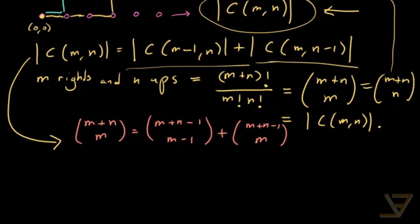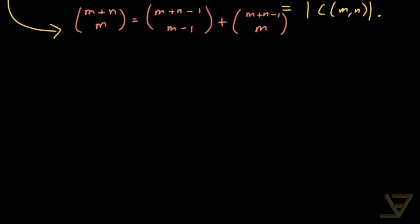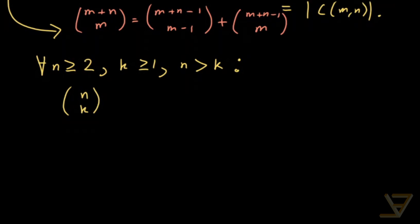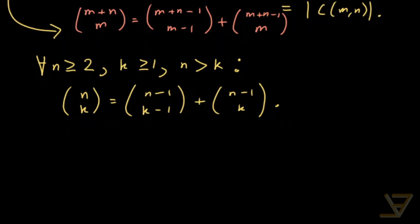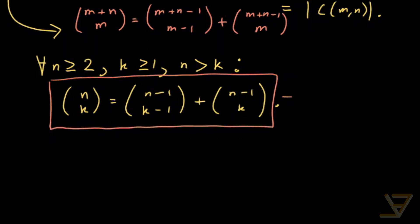We don't actually need m and n on top in that specific form. Taking a deeper look, we can write it in the following equivalent general form: for all integers n ≥ 2, k ≥ 1, and n > k, we have that C(n, k) equals C(n−1, k−1) plus C(n−1, k). This famous and useful identity is called Pascal's Identity.